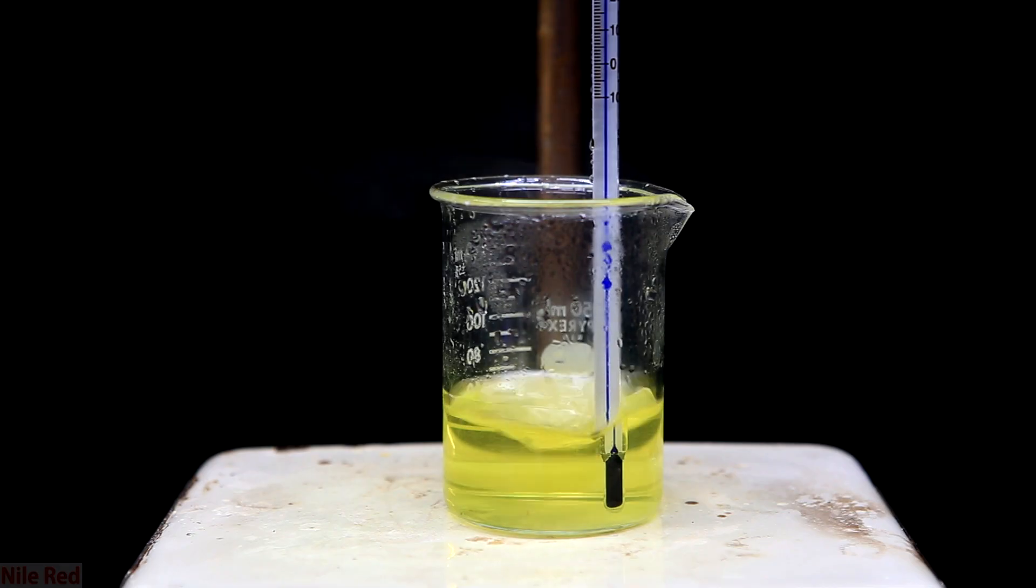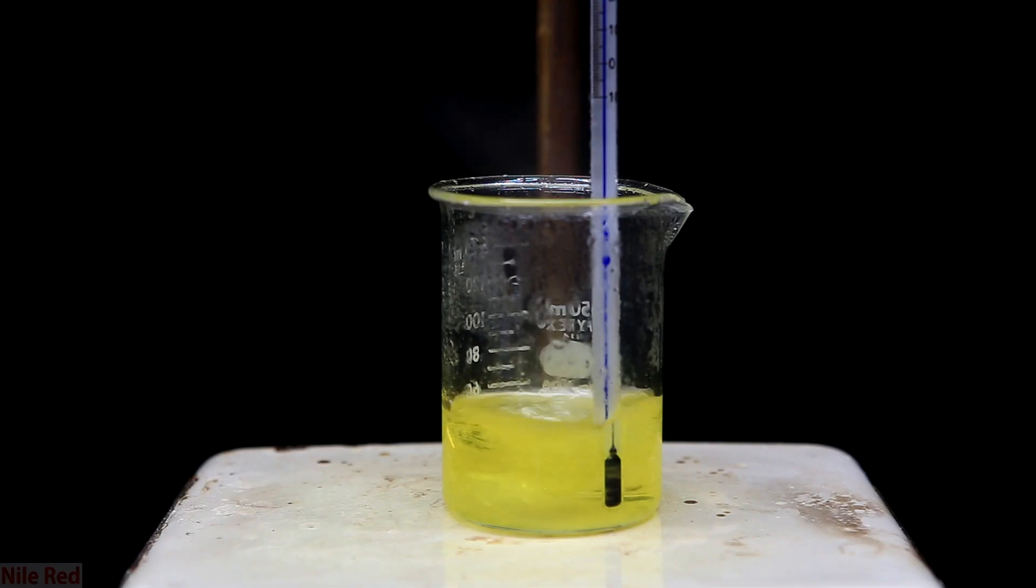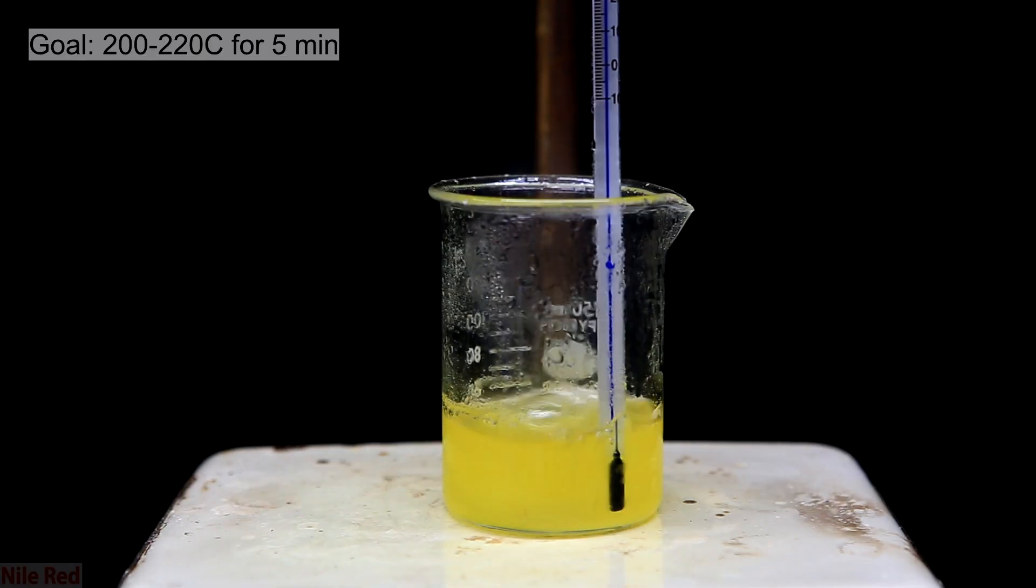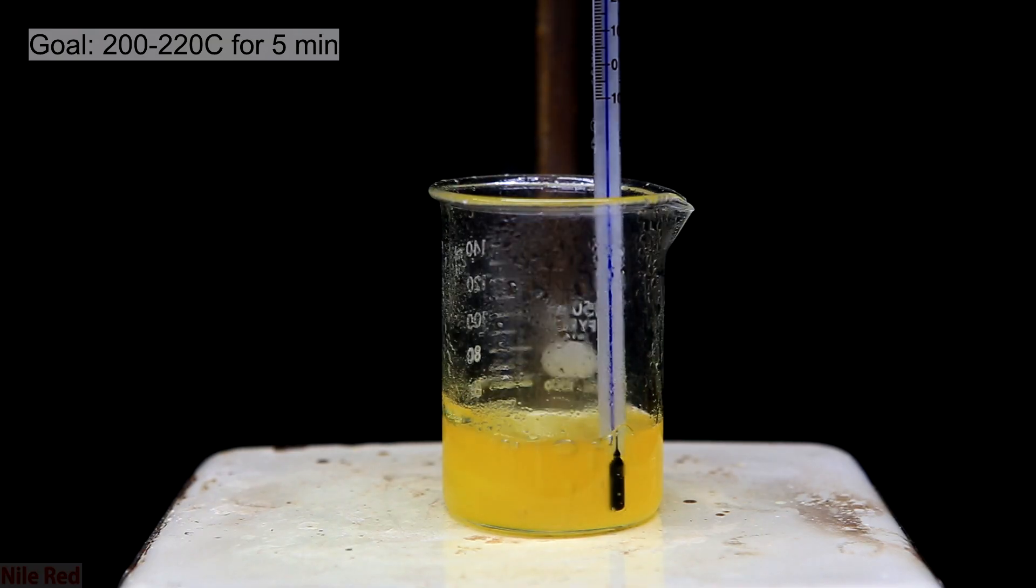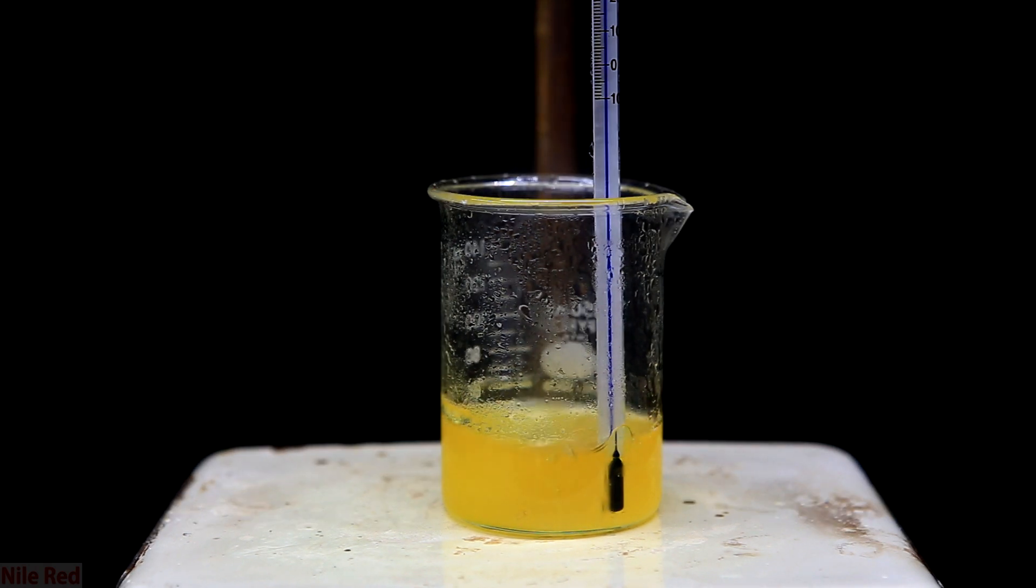It's very important to control the temperature, because it can easily spike much higher than 200, and if we get it too hot, we'll degrade our product. Once the temperature rises to about 200 C, we want to maintain it between 200 and 220 C for 5 minutes. This is why this reaction must be done with a high boiling point solvent like glycerol, because we need to get such high temperatures.